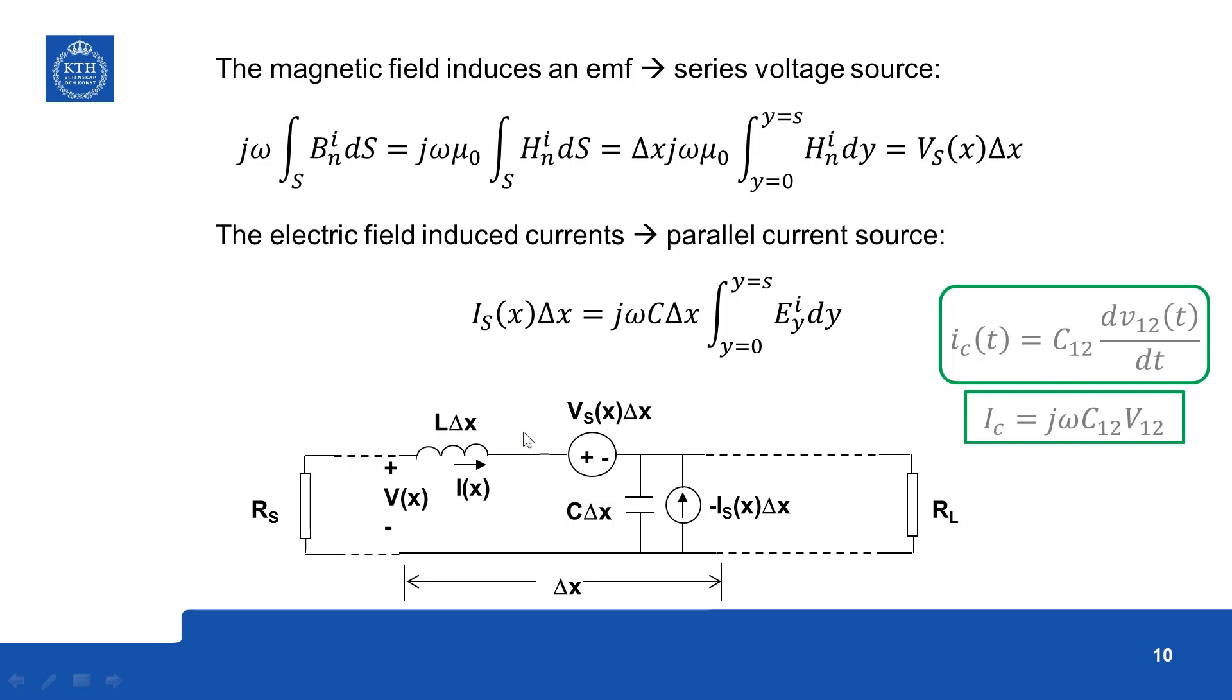So this completes our model, C delta x, L delta x and these sources. Similarly you can have several elements like that, so in each of these elements Vs and Is can be slightly different depending upon how the voltage and current is varying along the line. So this is the general case.